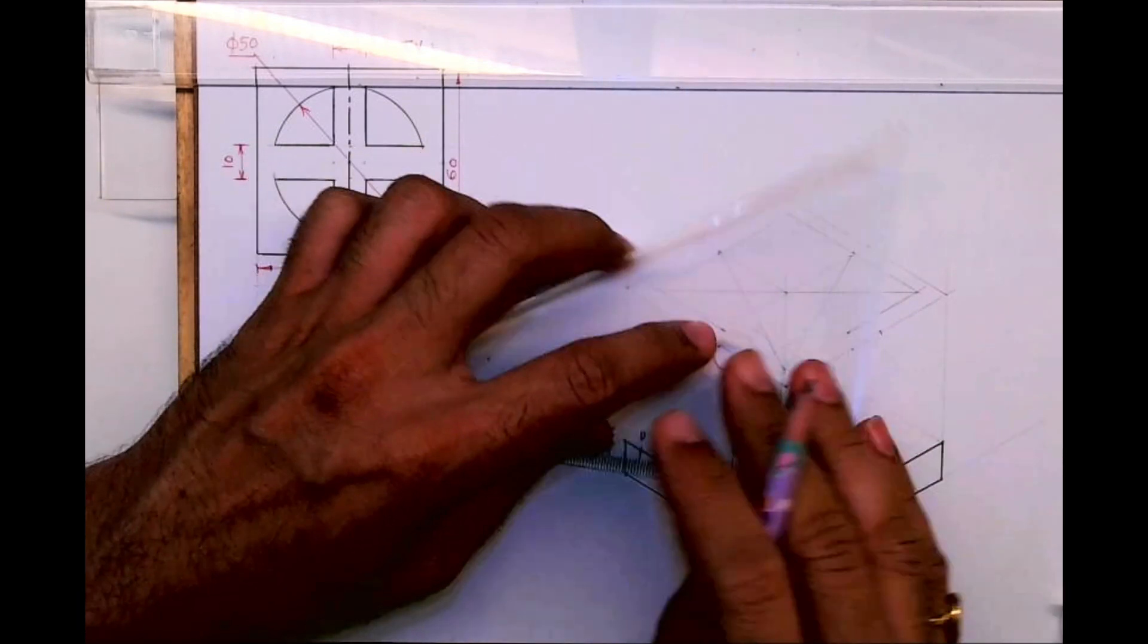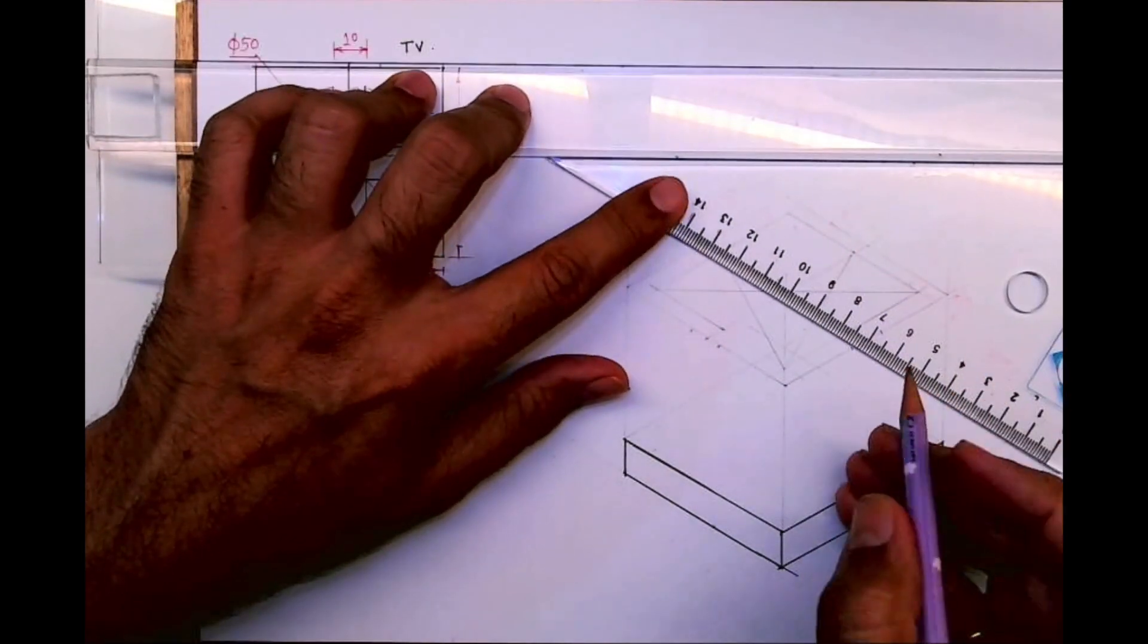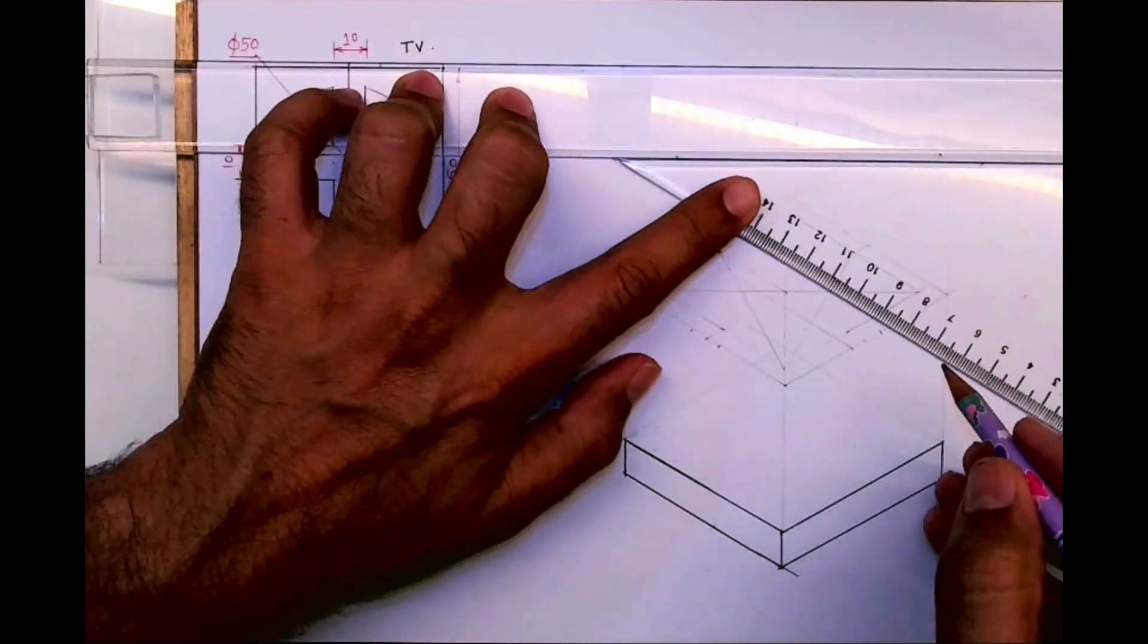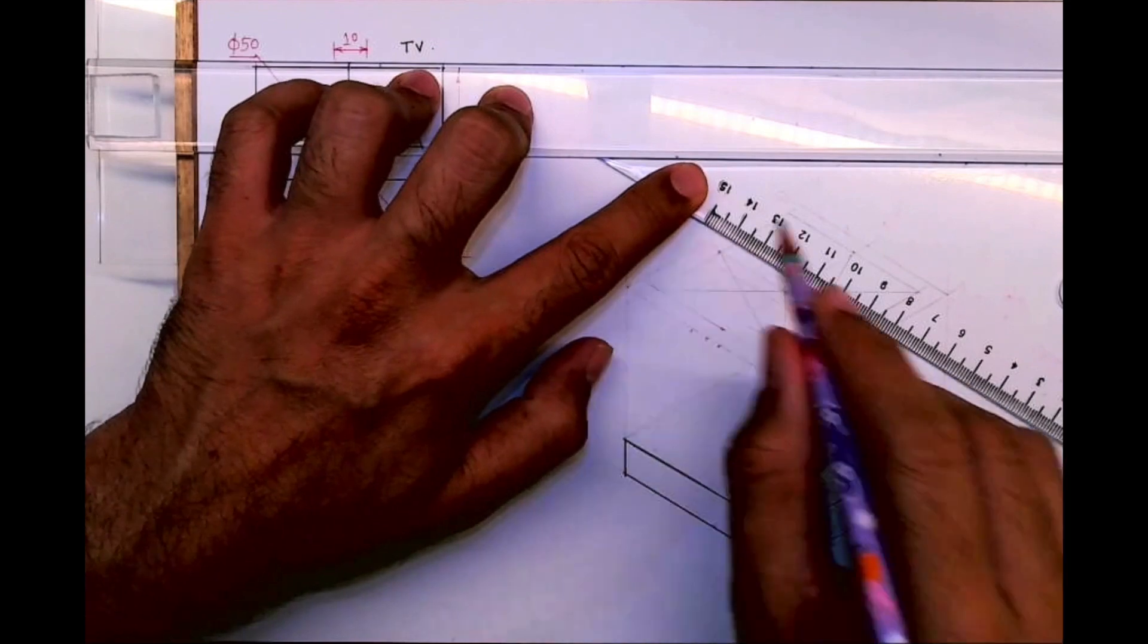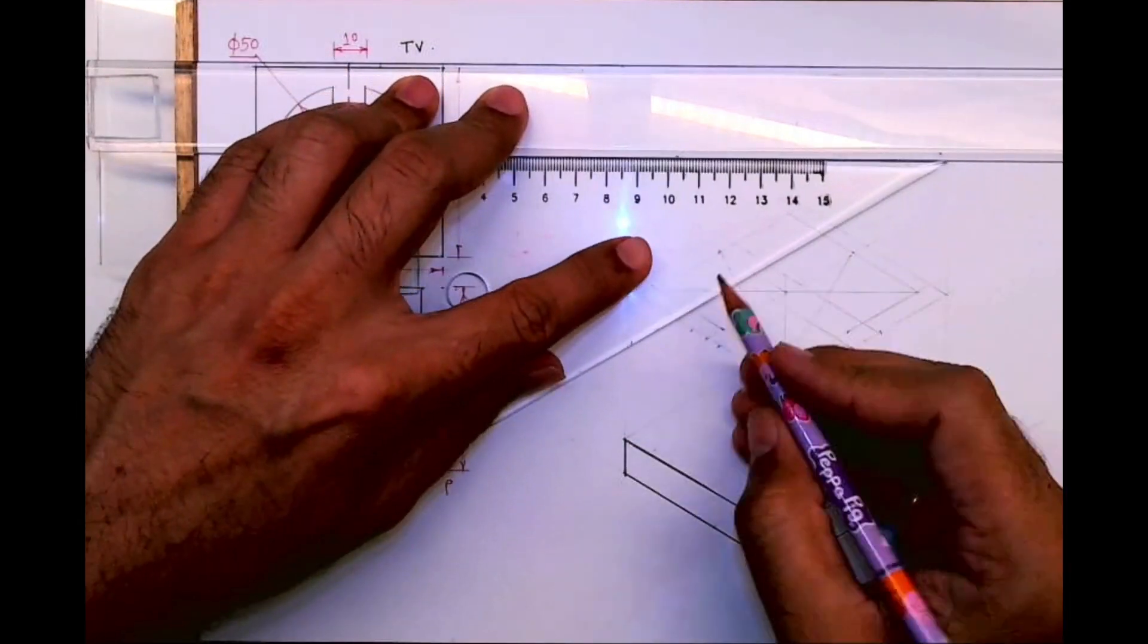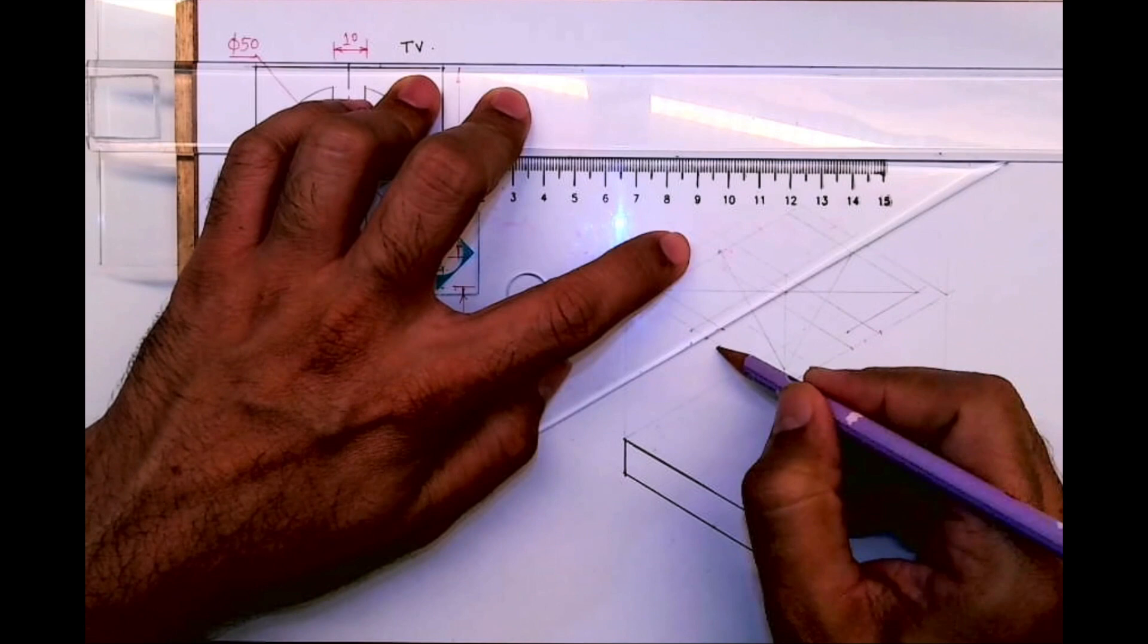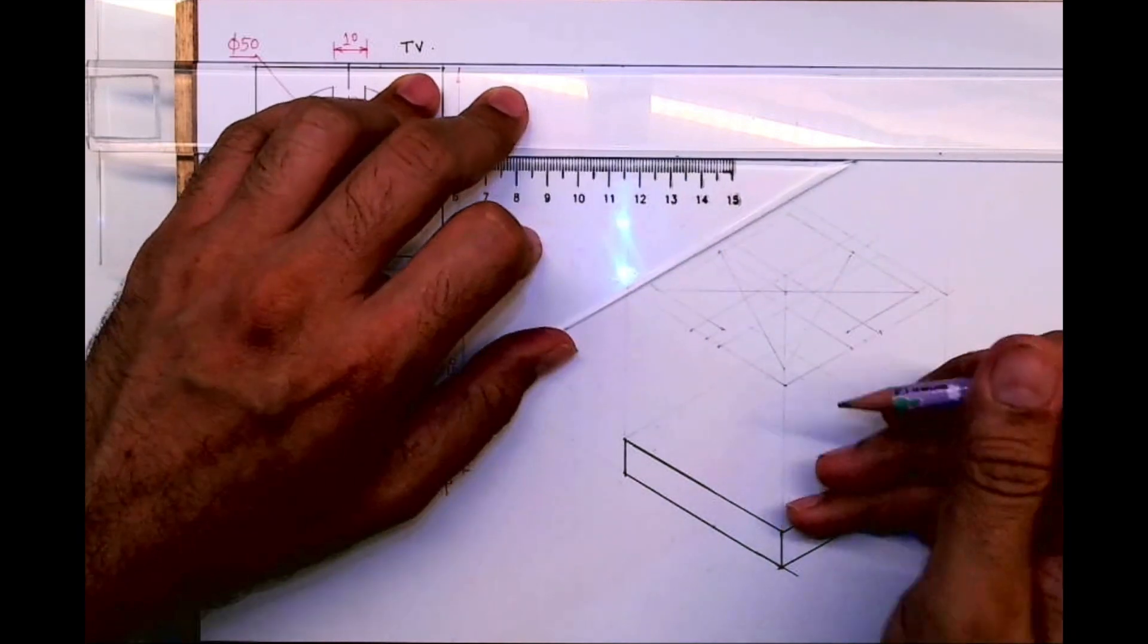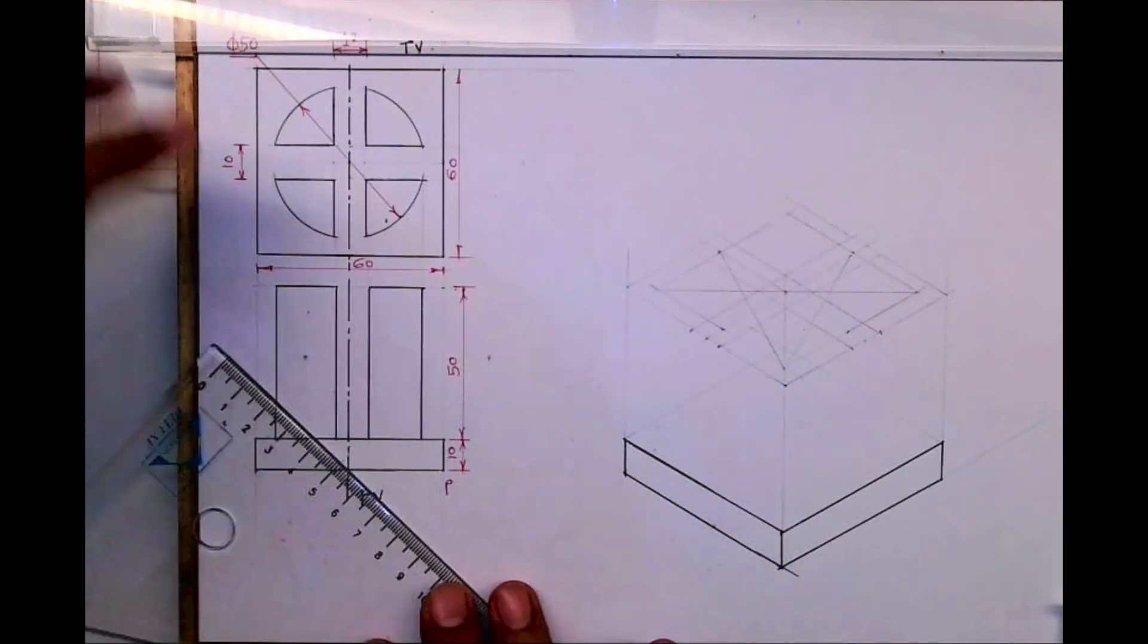So what I'm doing is drawing 10, 10 parallel lines - that means 5 mm, 5 mm on both sides of the center line - and I'm drawing plus like this.